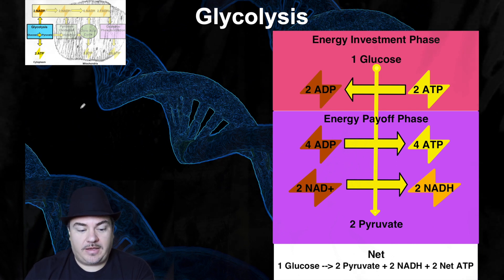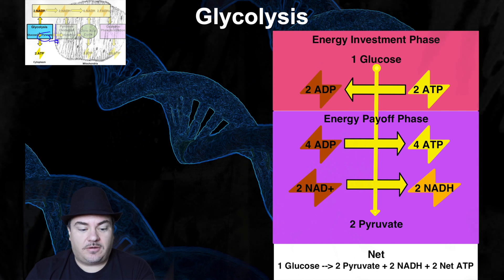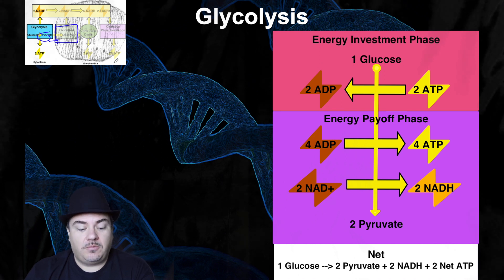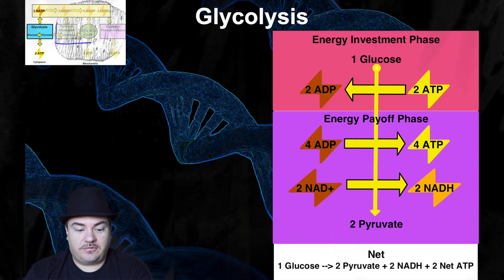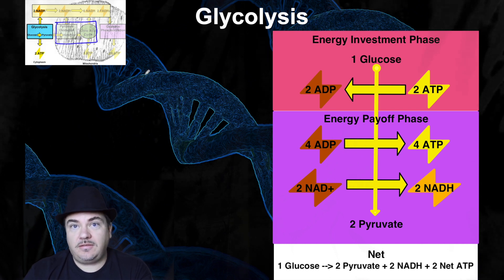That's the first main stage of aerobic cellular respiration. Now that we have pyruvate, it's going to be brought into the minor stage called pyruvate oxidation. In the next video lecture, we're going to talk about pyruvate oxidation and the citric acid cycle. So until then, this has been Dr. Sage.